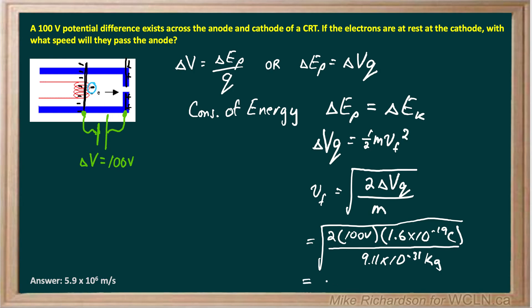When I work all that out, I end up getting 5.93 times 10 to the 6 meters per second.